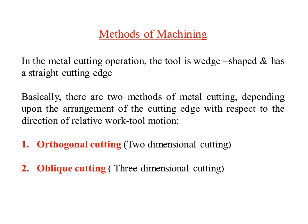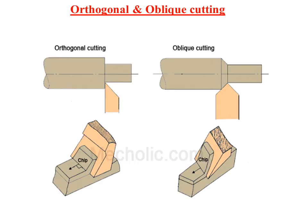Basically there are two methods of metal cutting depending upon the arrangement of cutting edge with respect to the direction of the relative work-tool motion. The arrangement of the cutting edge is the specific point we want to emphasize when telling the difference between orthogonal cutting and oblique cutting.